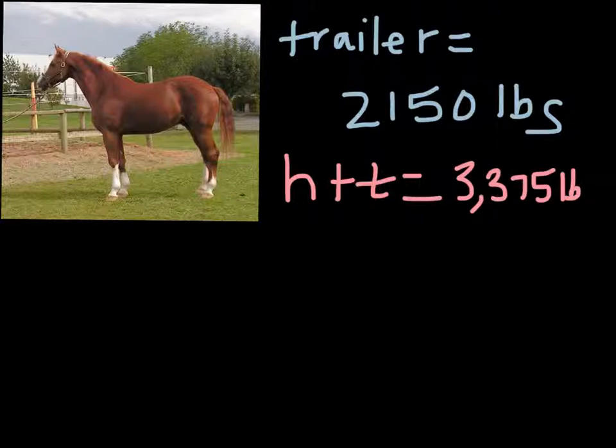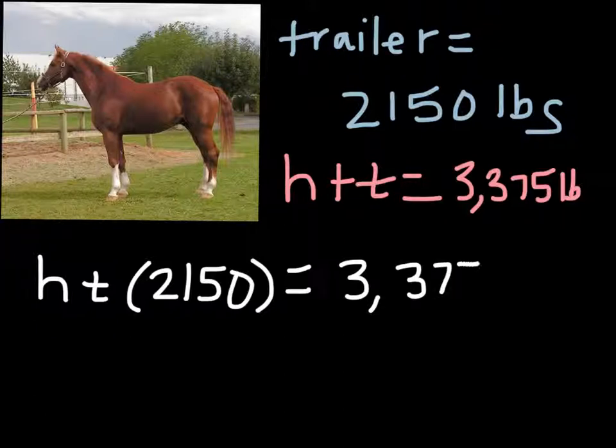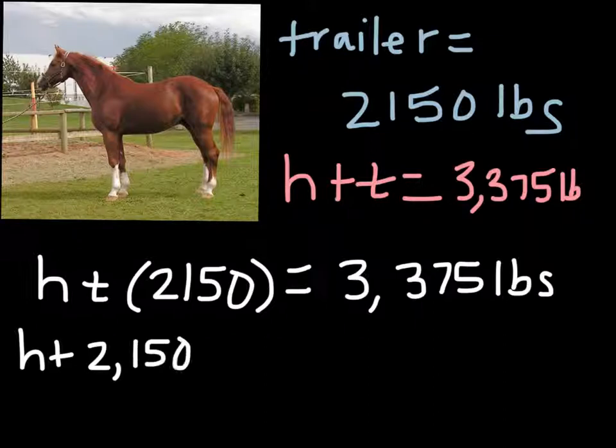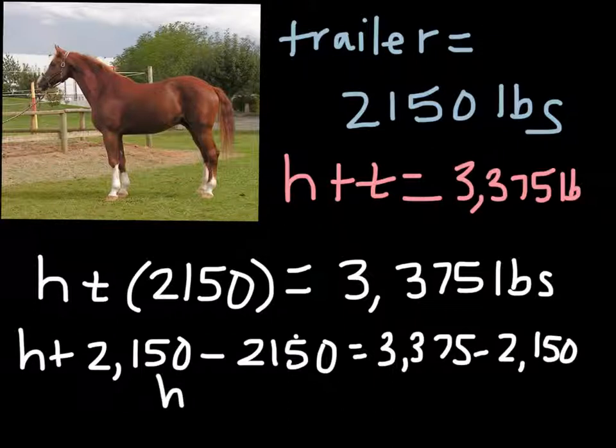We have all the information we need to solve for the weight of the horse. If the horse is represented by h, we know the weight of the trailer is 2,150 pounds, and the total is 3,375 pounds. So h plus 2,150 minus 2,150 equals 3,375 minus 2,150. Therefore the weight of the horse is going to be equal to 1,225 pounds.